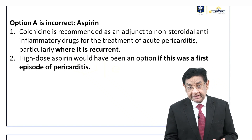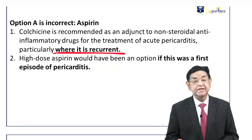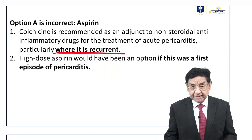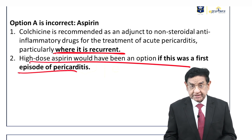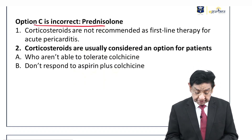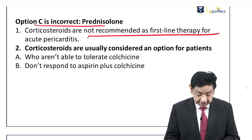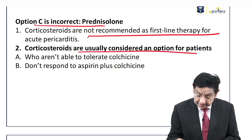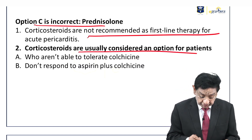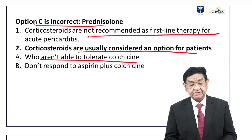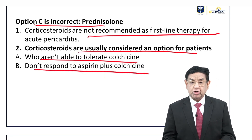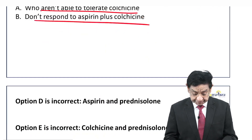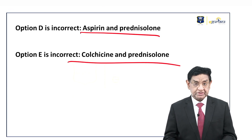Option A, aspirin alone, is incorrect because in a recurrent attack, colchicine must be added. If this had been the first attack only, then aspirin alone would be the answer. Option C, prednisolone, is incorrect — steroids are never the first-line therapy for acute pericarditis. We use steroids only in certain conditions where patients are not able to tolerate colchicine or do not respond to the combination of aspirin and colchicine. Aspirin and prednisolone together are never a correct choice.